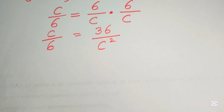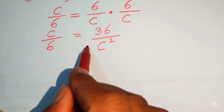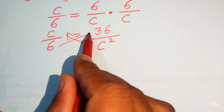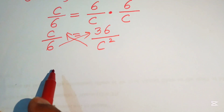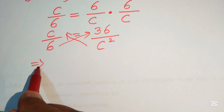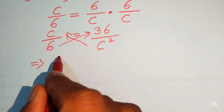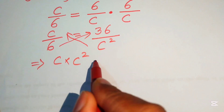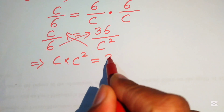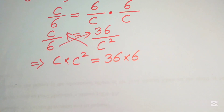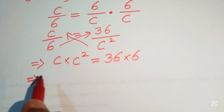We need to cross-multiply the terms. We move C squared to the left-hand side and 6 to the right-hand side. When you cross-multiply, you get C multiplied by C squared equals 36 multiplied by 6.